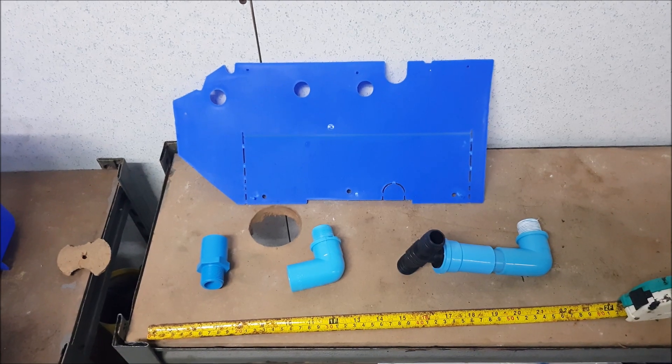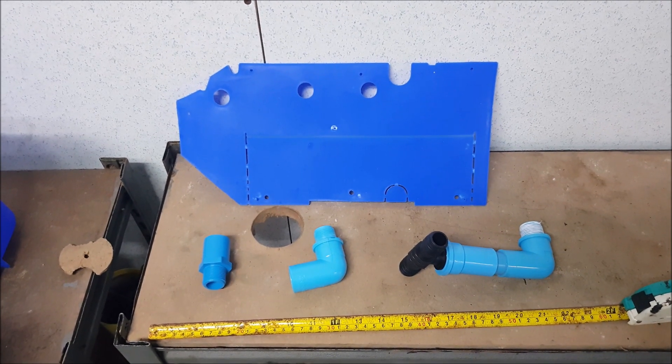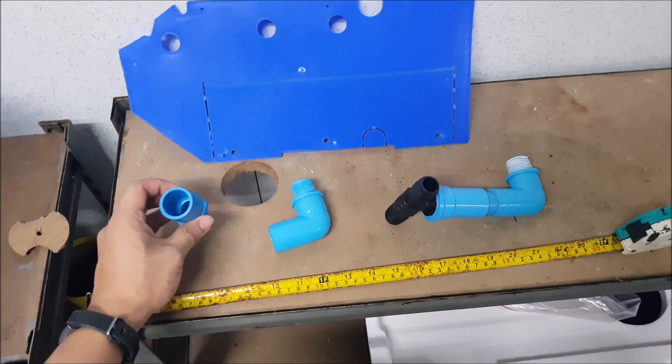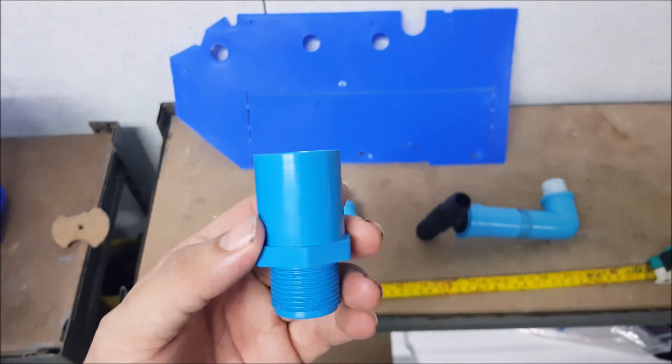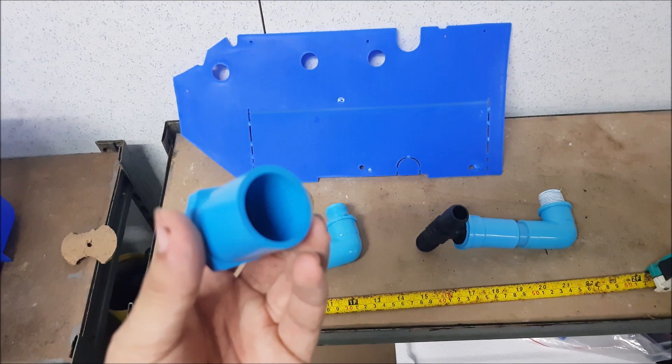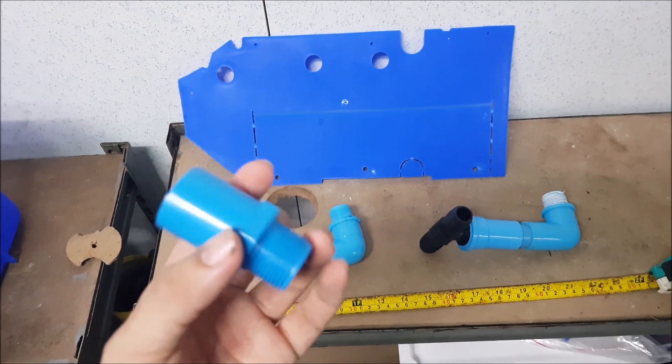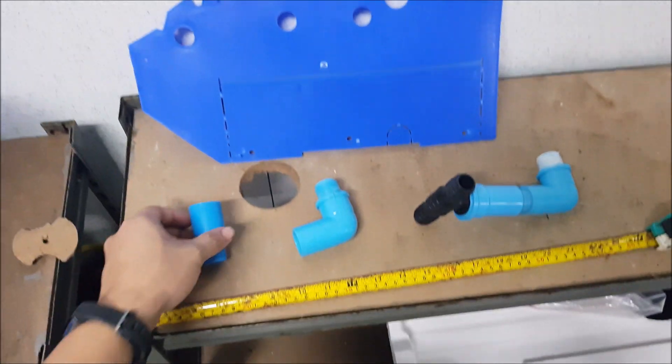Firstly you have what we call the overflowing tube. This is standard PVC part. If you would like to make the overflowing level higher you just simply add in a PVC pipe onto it.